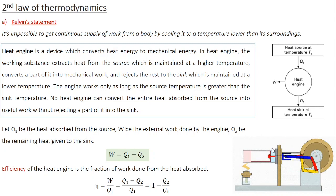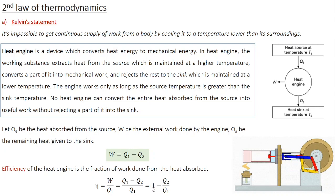The efficiency of the heat engine is defined as the fraction of work done from the heat absorbed. So efficiency η = W / Q1. Since W = Q1 − Q2, we get η = (Q1 − Q2) / Q1 = 1 − Q2/Q1.